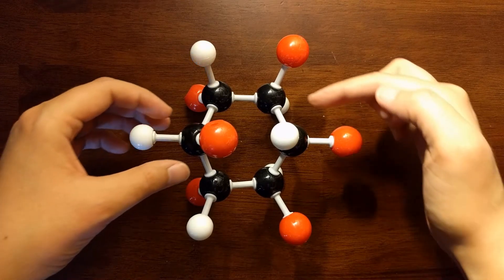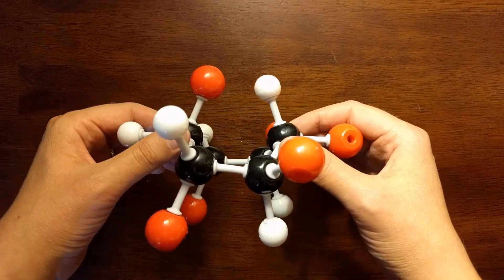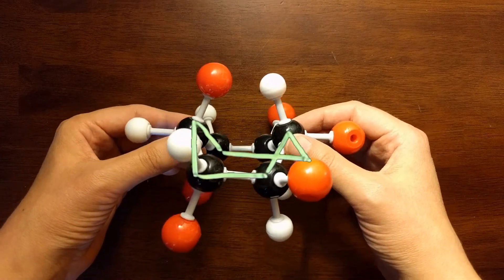This is a molecule called cyclohexane. We have six black carbons in a ring. Each carbon has two hydrogens. Right now this is in boat conformation.